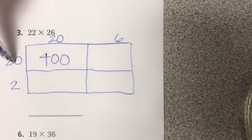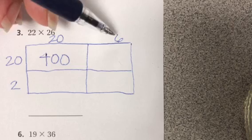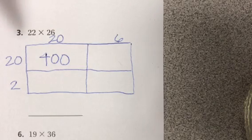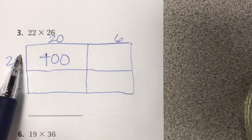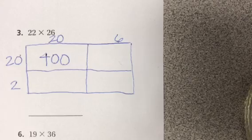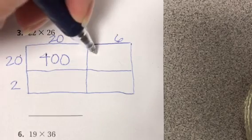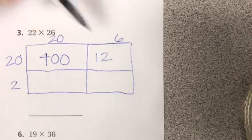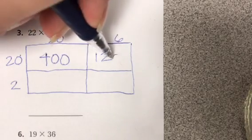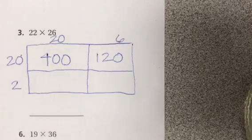Now I'm going to do 20 times 6. If I ignore this zero I have a base fact of 2 times 6. 2 times 6 is 12. And I covered up 1, 0. So I need to make sure I put that back on.